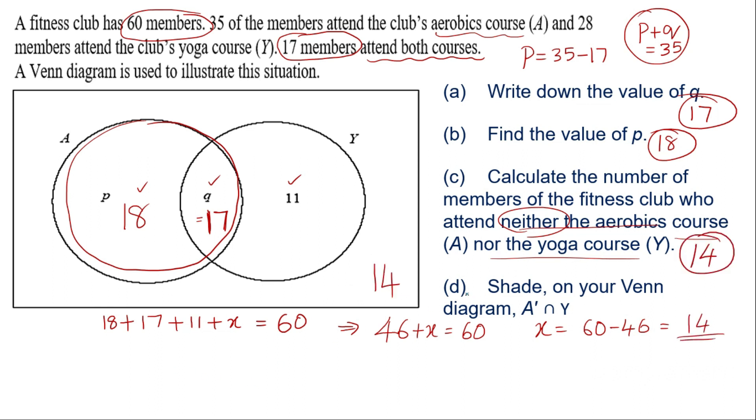Now the last part D shade on your Venn diagram A complement intersection Y. So which means where is A complement in Y. So A complement means the region outside of A falling in Y. So this is where you have A complement falling in Y. So this is the answer.